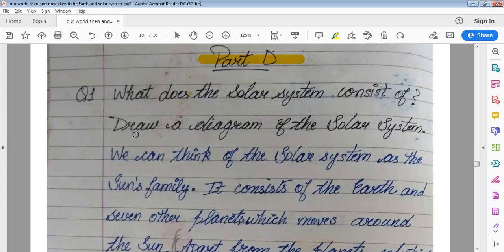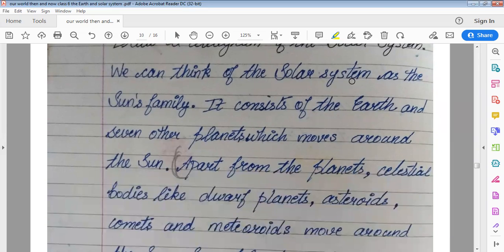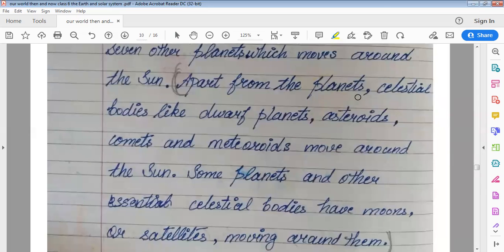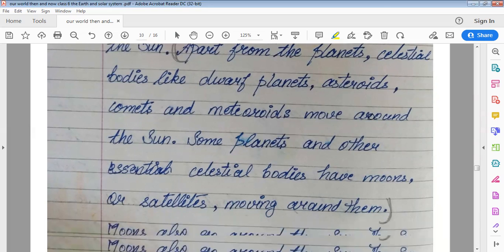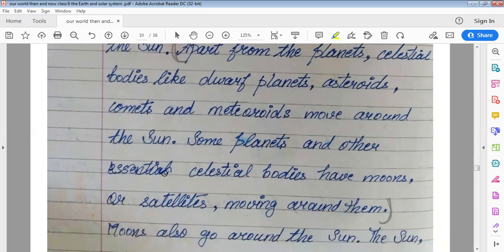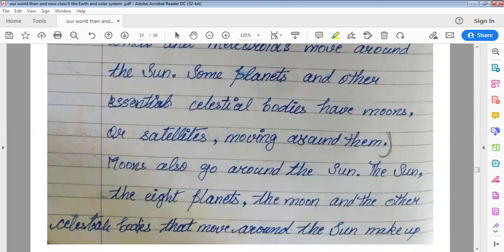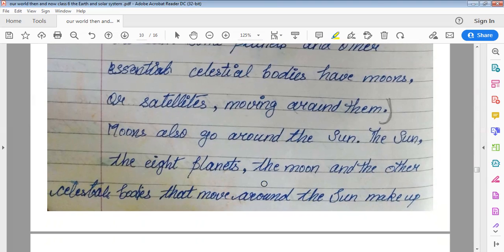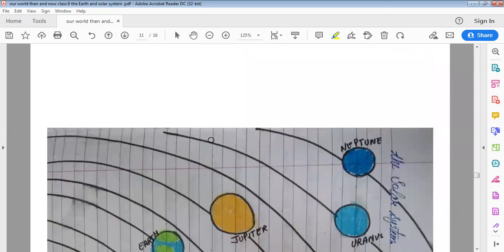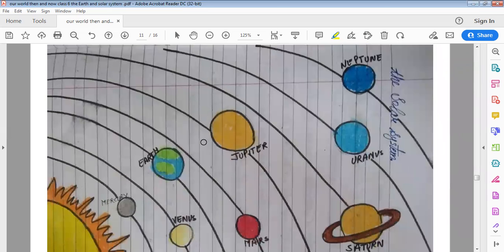What does the solar system consist of? Draw a diagram of solar system. We can think of solar system as the sun's family. It consists of earth and seven other planets which move around the sun. Apart from planets, celestial bodies like dwarf planets, asteroids, comets and meteoroids move around the sun. Some planets and other celestial bodies have moons or satellites moving around them. Moons also go around the sun. The sun, the eight planets, the moon and the other celestial bodies that move around the sun make up the solar system. So, this is the picture of solar system.